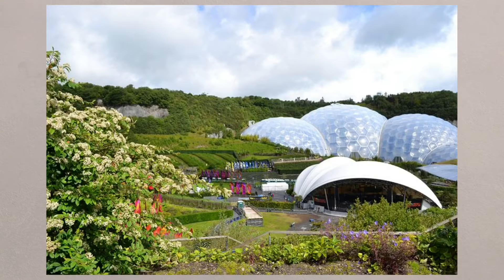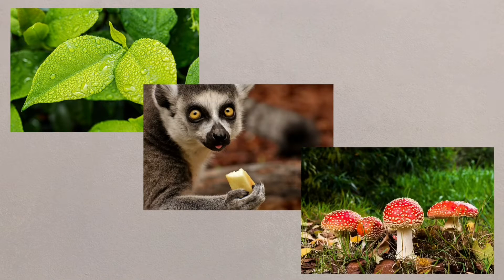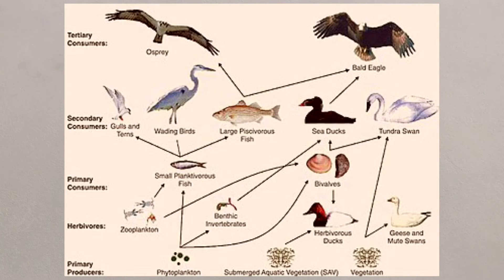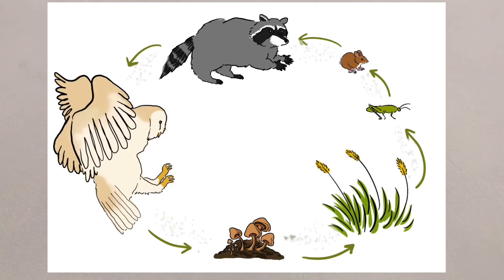Ecosystems comprise of relationships between different components, from producer to consumer to decomposer. And these interrelationships can be seen on a food chain or web, with nutrient cycling being at the heart of each ecosystem.